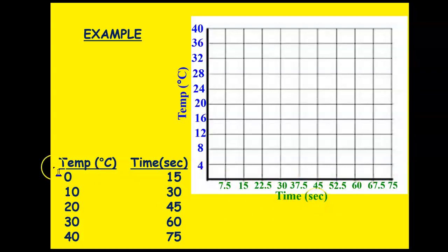Then I'm going to start plotting these points. Again, you have your x value and your y value. Here on my x, I'm looking at 15 and the y value is 0, so therefore it's going to be right here. Then I go to the next one: 30 seconds and 10 degrees Celsius.